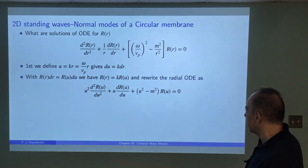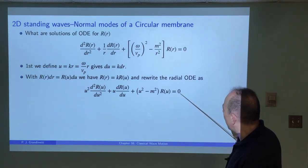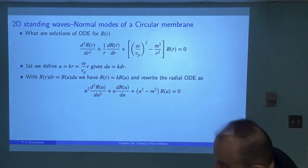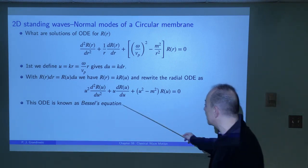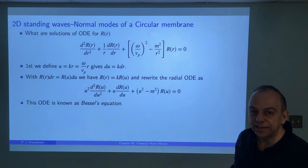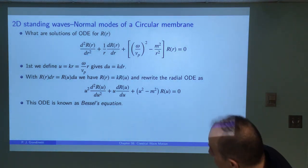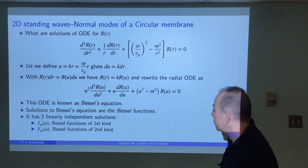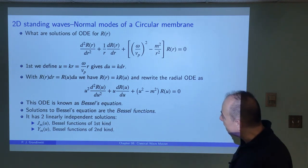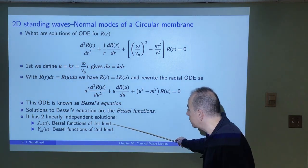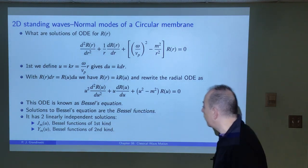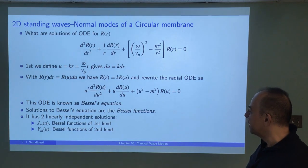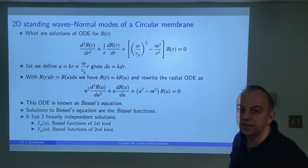This is Bessel's equation, well known in mathematics, and its solutions have been worked out — they're called Bessel functions. There are two types: Bessel functions of the first kind and of the second kind. For this membrane problem, we'll only need Bessel functions of the first kind. Since all solutions are already known, we just need to understand how they work and then apply them to our wave problem.